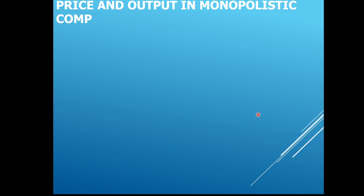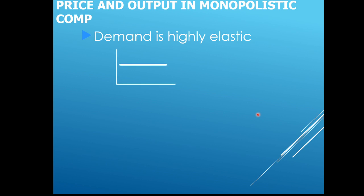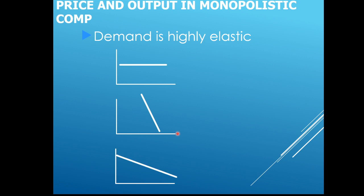Let's look at price and output in the monopolistic market. The demand for the monopolistic good is highly elastic. As a quick review: the perfect competitor had a horizontal demand line — perfectly elastic. The monopolist had a downward-sloping, steeper demand curve — highly inelastic. The monopolistic competitor falls in between. If the perfect competitor and the monopolist had a baby, it would be the monopolistic competitor.